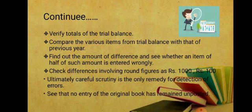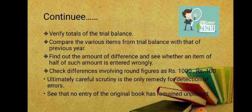The auditor must also see that no entry from the original books has remained unposted. Any entry made in the journal must be properly posted to the ledger and reflected in the trial balance. The auditor is supposed to check that all original book entries have been properly posted.